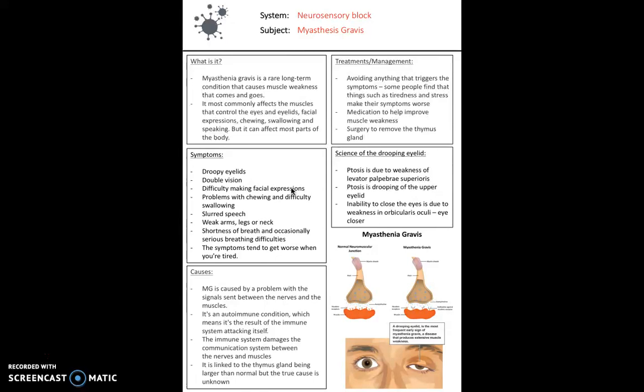Myasthenia gravis is an autoimmune condition, meaning the body's immune system is attacking itself. This damages the communication between the nerves and the muscles, leading to weakness. There are also links to the thymus gland being larger than normal. The true cause is unknown, but that is why surgery to remove the thymus gland is sometimes part of the treatment.